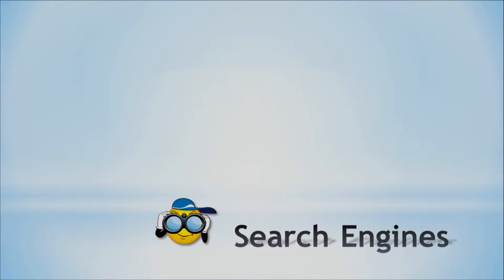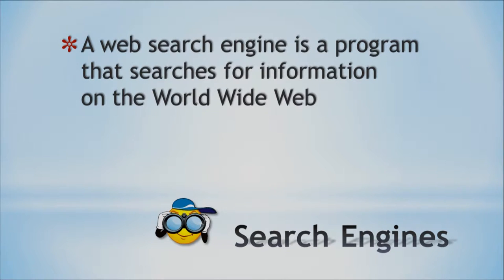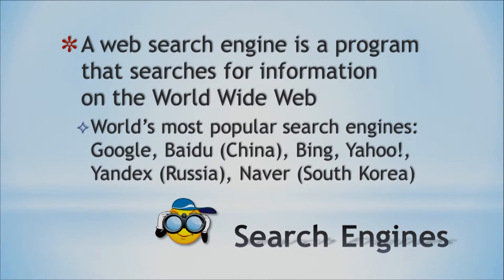Let's look at search engines. Whenever you're looking for something on the World Wide Web, you use a search engine. Some popular ones — y'all are probably already familiar with most of these. Google's big. Bing is from Microsoft, and Yahoo — those are the three big ones in the States. The second most popular search engine in the world is from China: Baidu. Another big one is from Russia: Yandex. And South Korea has Naver. Anyway, there are lots of different search engines we can use, and there's a lot more than that.